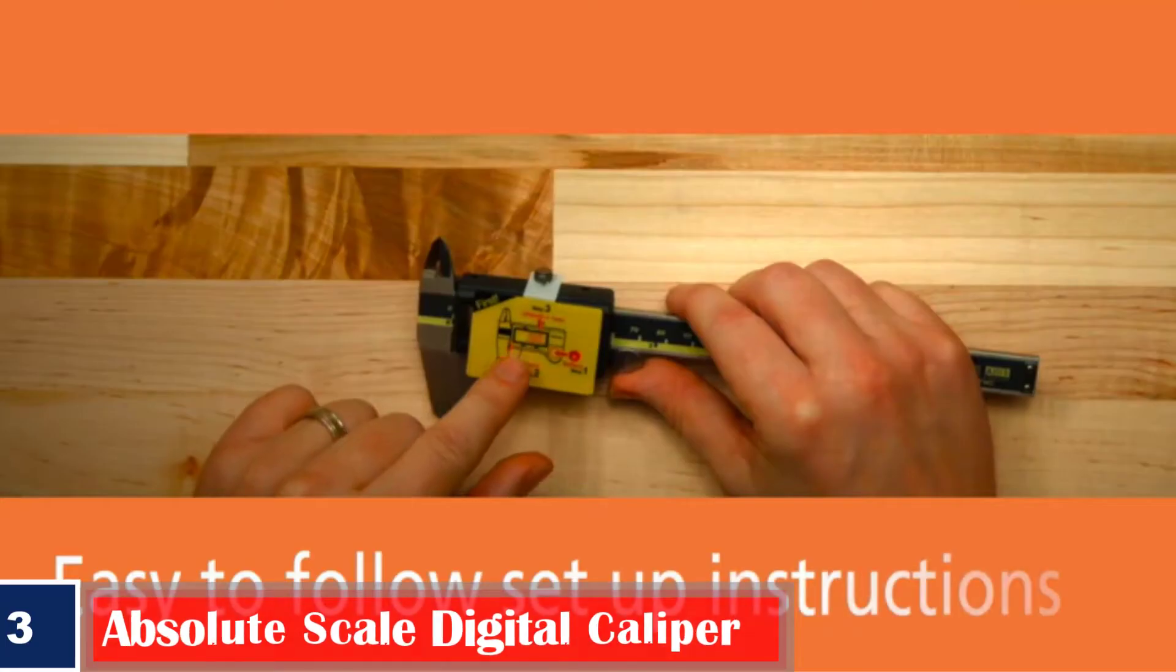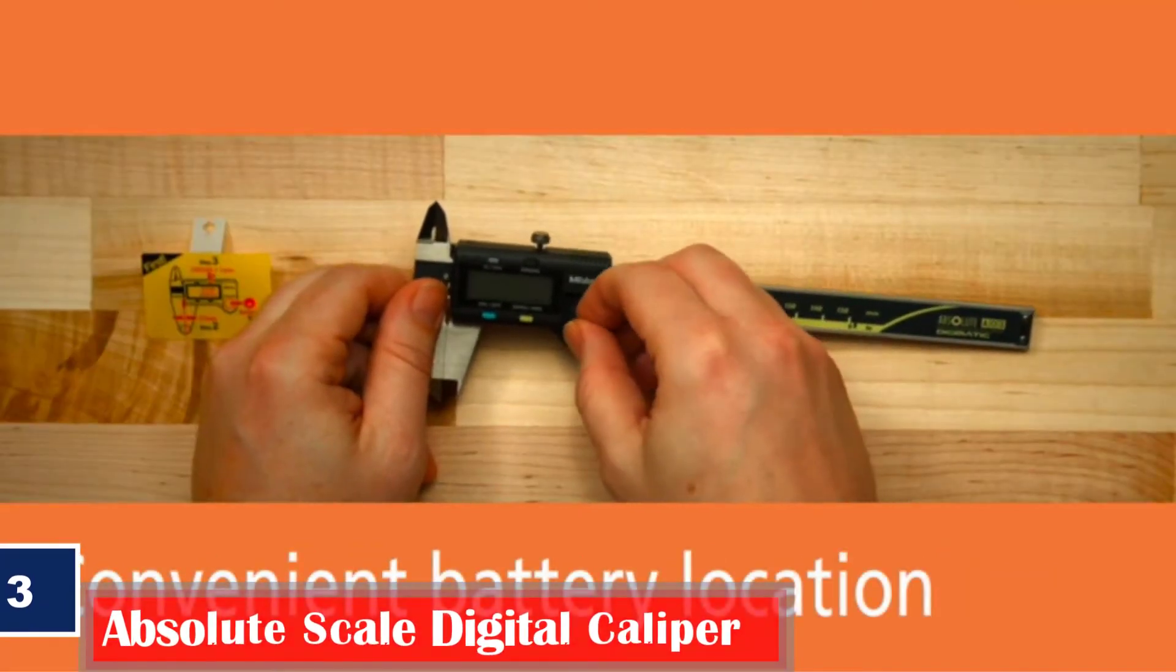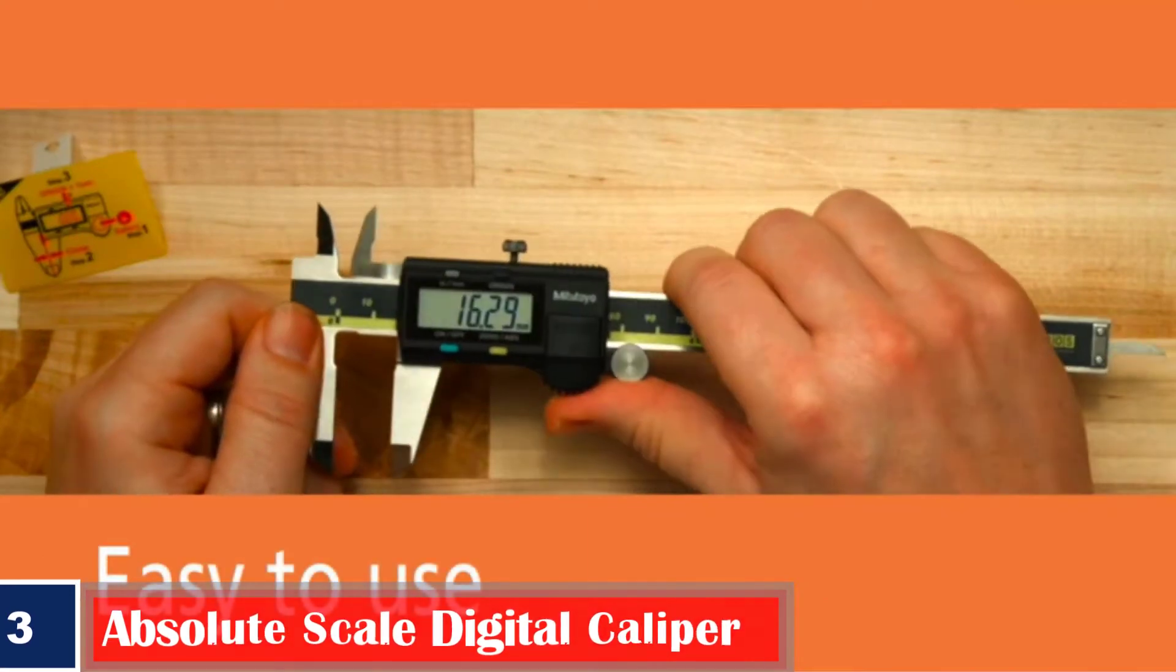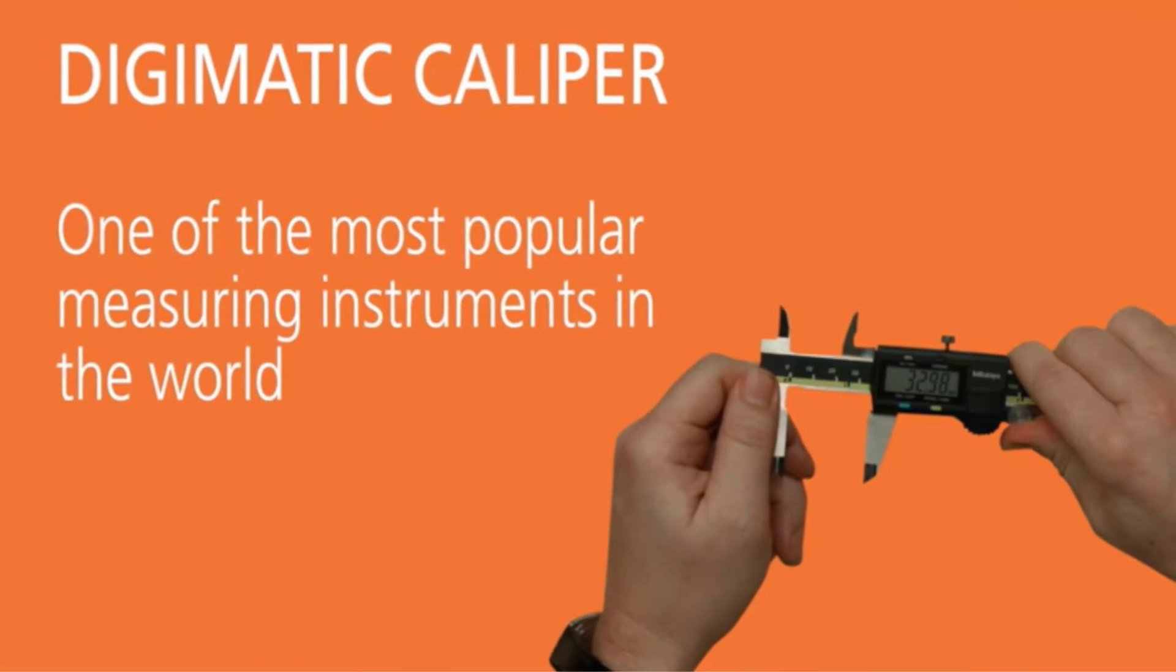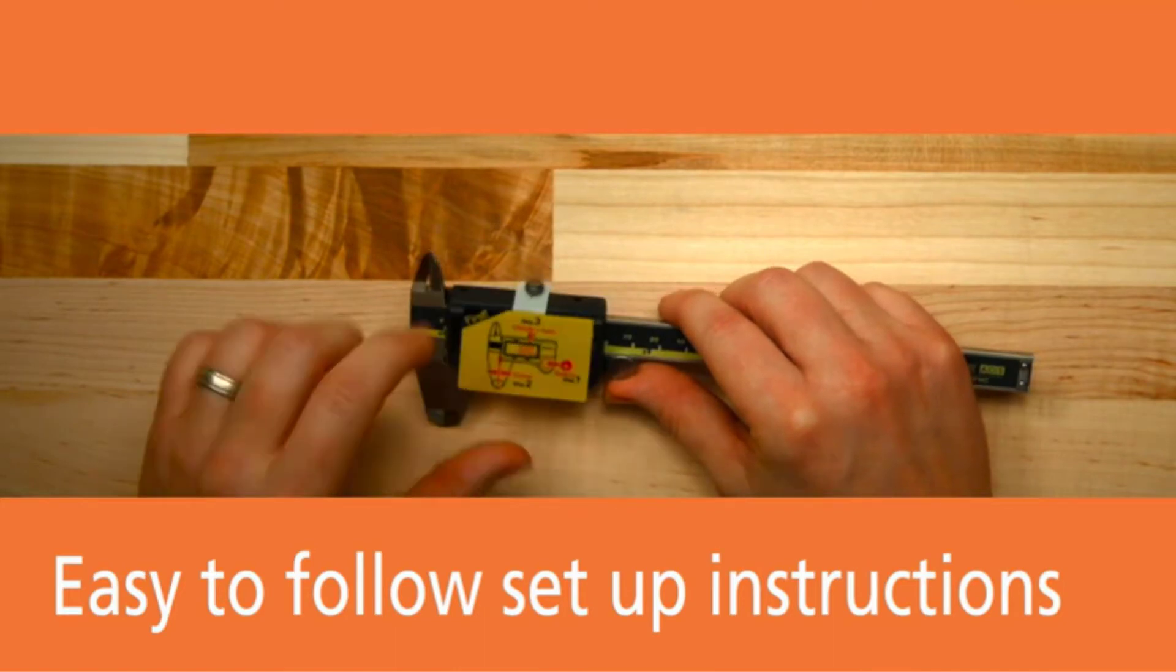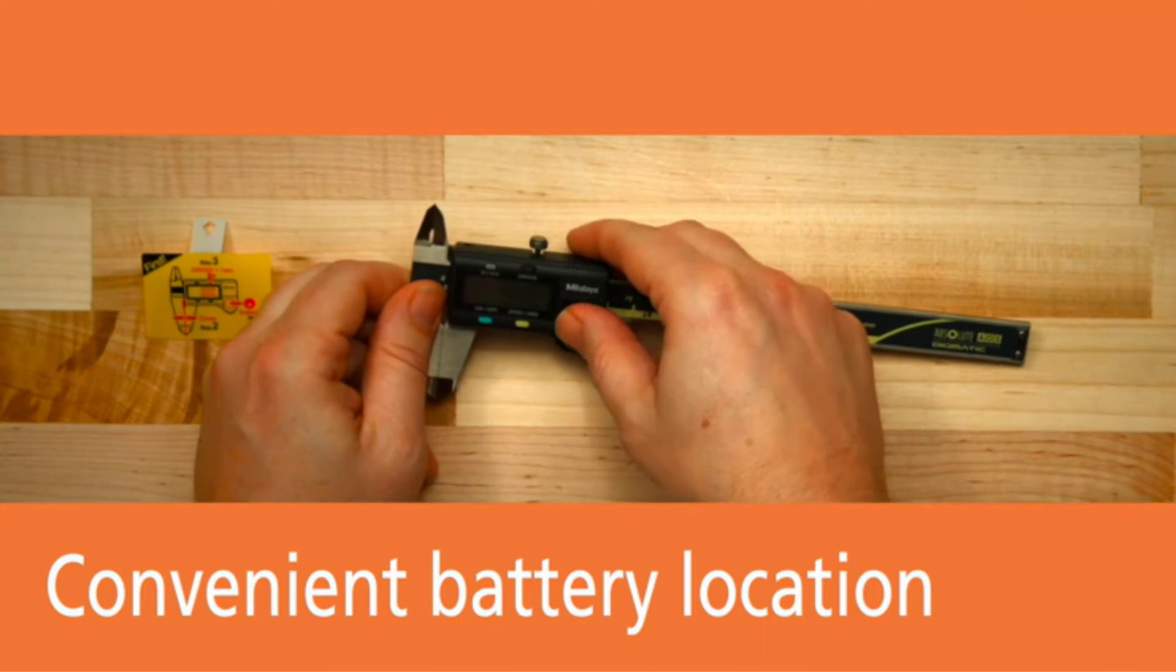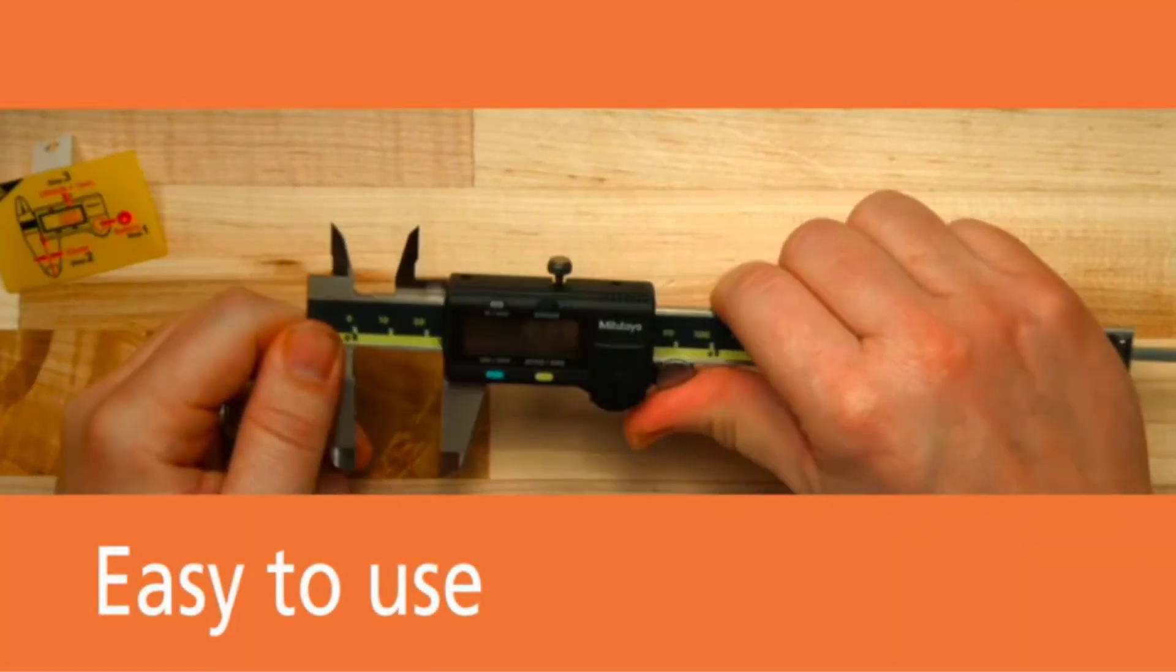Number 3, Best Durable. Mitutoyo Advanced On-Site Sensor Absolute Scale Digital Caliper. The 500-19630 Absolute Scale Digital Caliper from Mitutoyo features the OWZ or Advanced On-Site Sensor for exact measurements. It has a large measuring range of 0-6 inches, making it useful for various readings. The battery-powered caliper is durable with its stainless steel body and has a measurement accuracy of up to 0.0005 inches for precise readings.